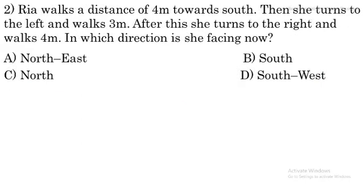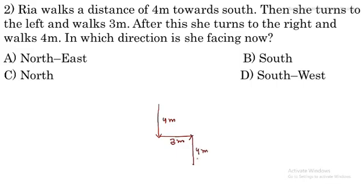Next question: Riya walks a distance of 4 meters towards south. South is downwards, so she walked 4 meters south. Then she turns to the left — when facing south, left is east — and walked 3 meters in that direction. After this she turns to the right and walked 4 meters.